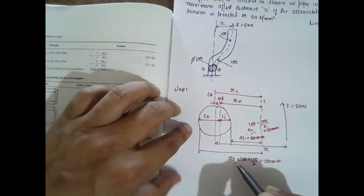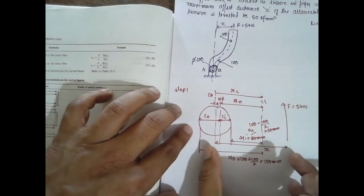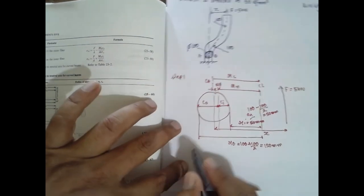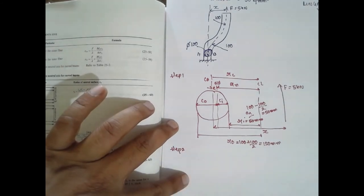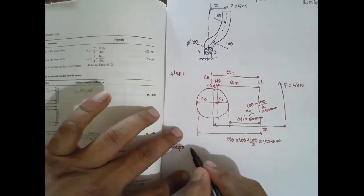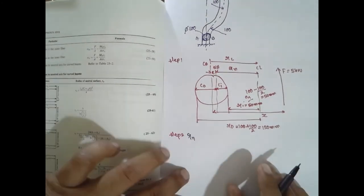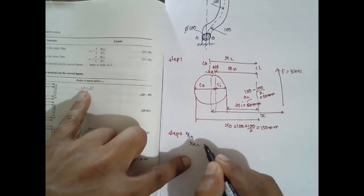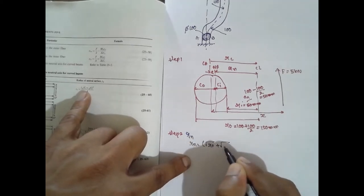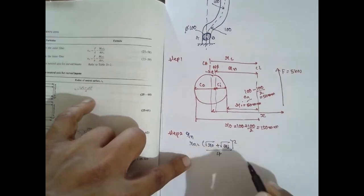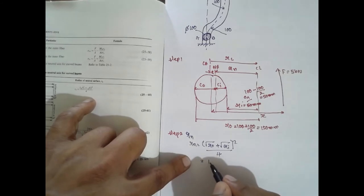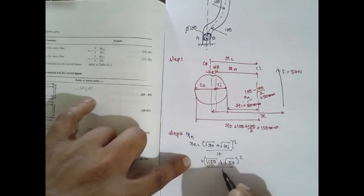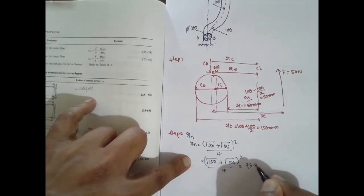You will get ri and r0, and you have to find out rn and rc. Step 2: you have to find out rn value. The formula is: rn is equal to root of (r0 plus ri) whole square divided by 4. r0 is 150, so 150 root plus 50 whole square divided by 4. The answer will be 93.3 mm.